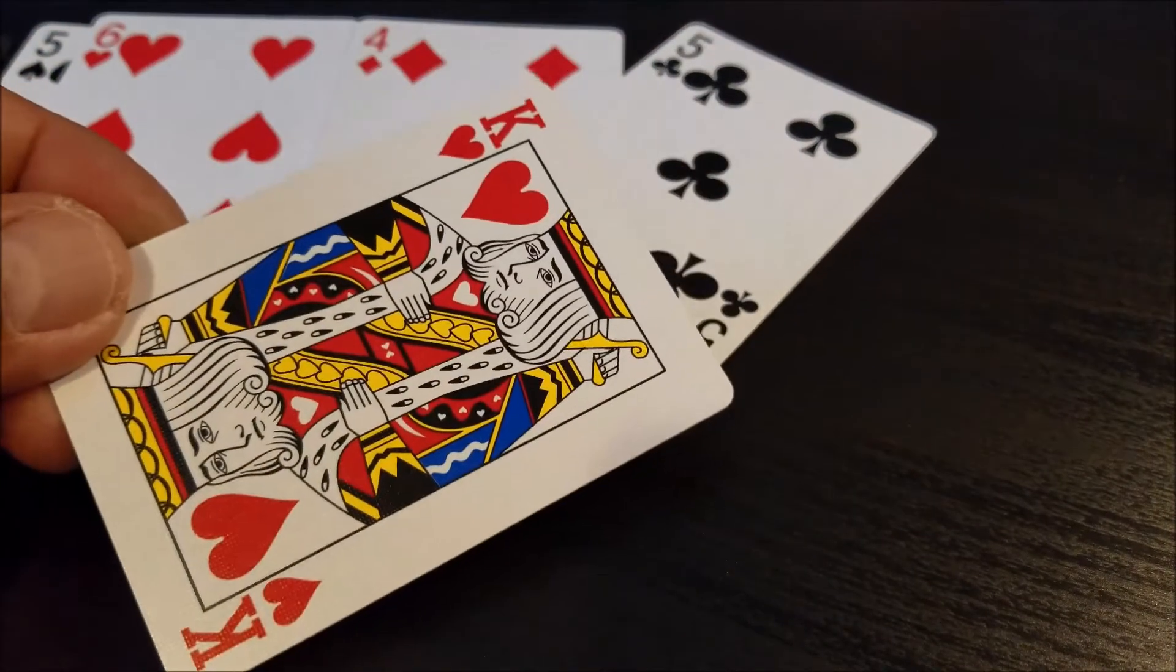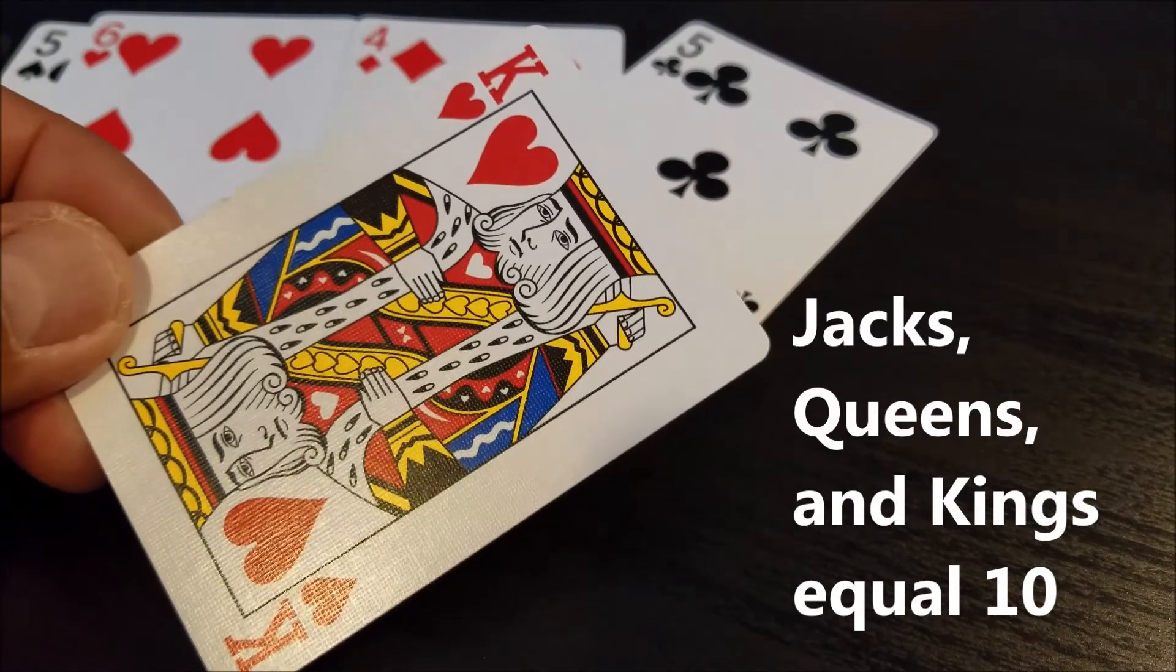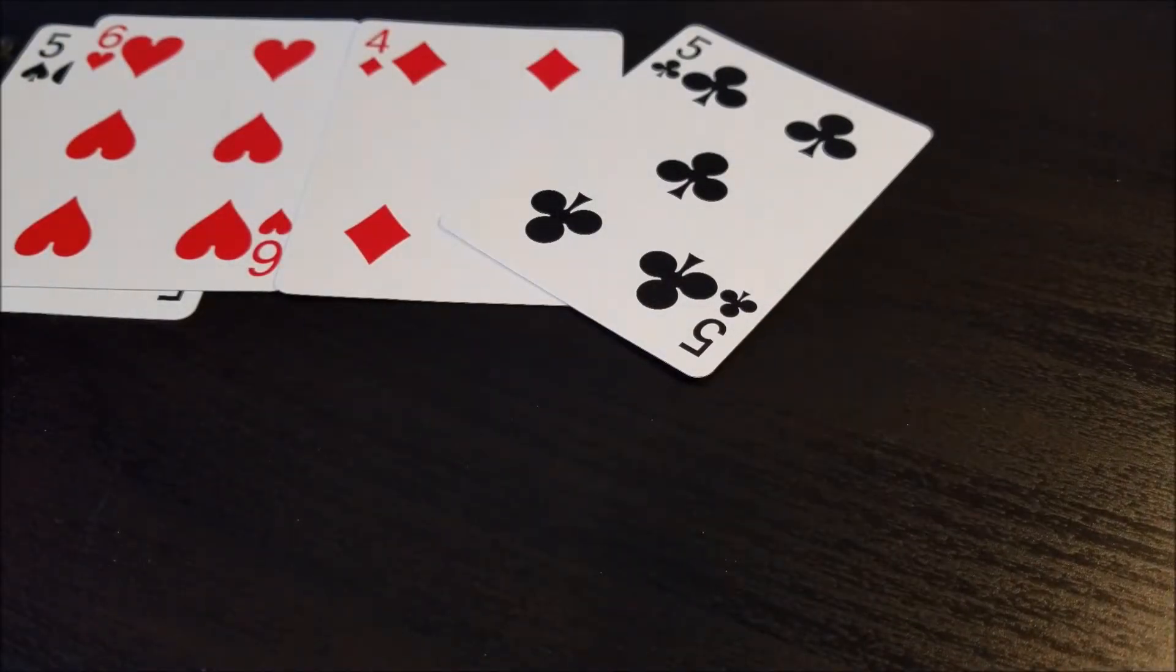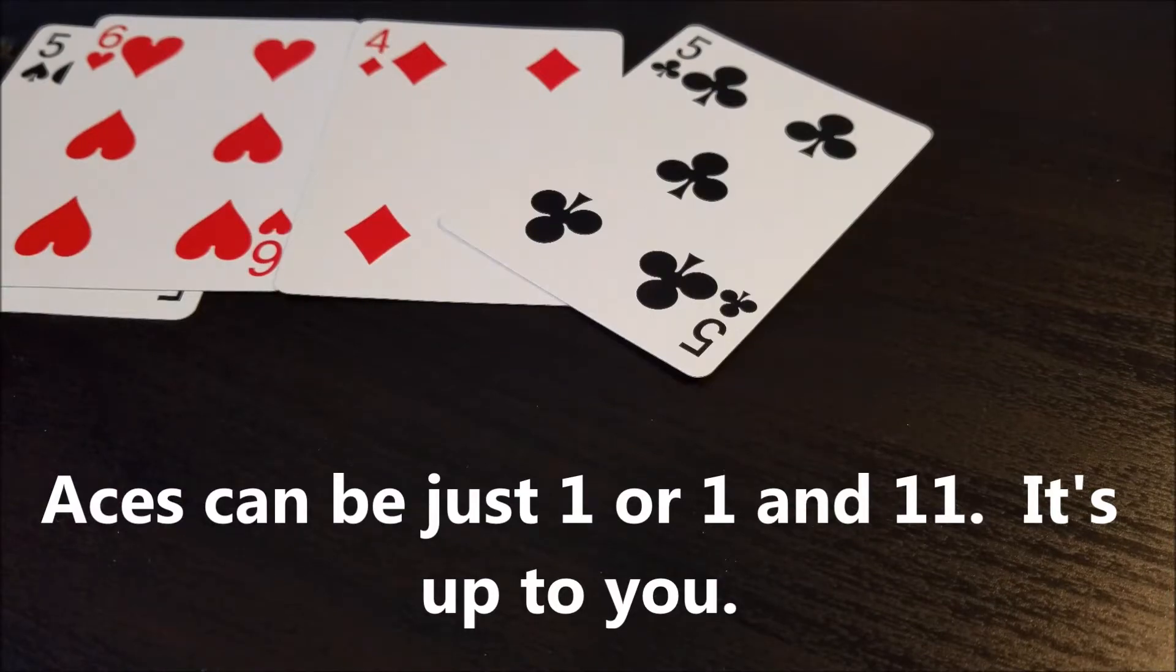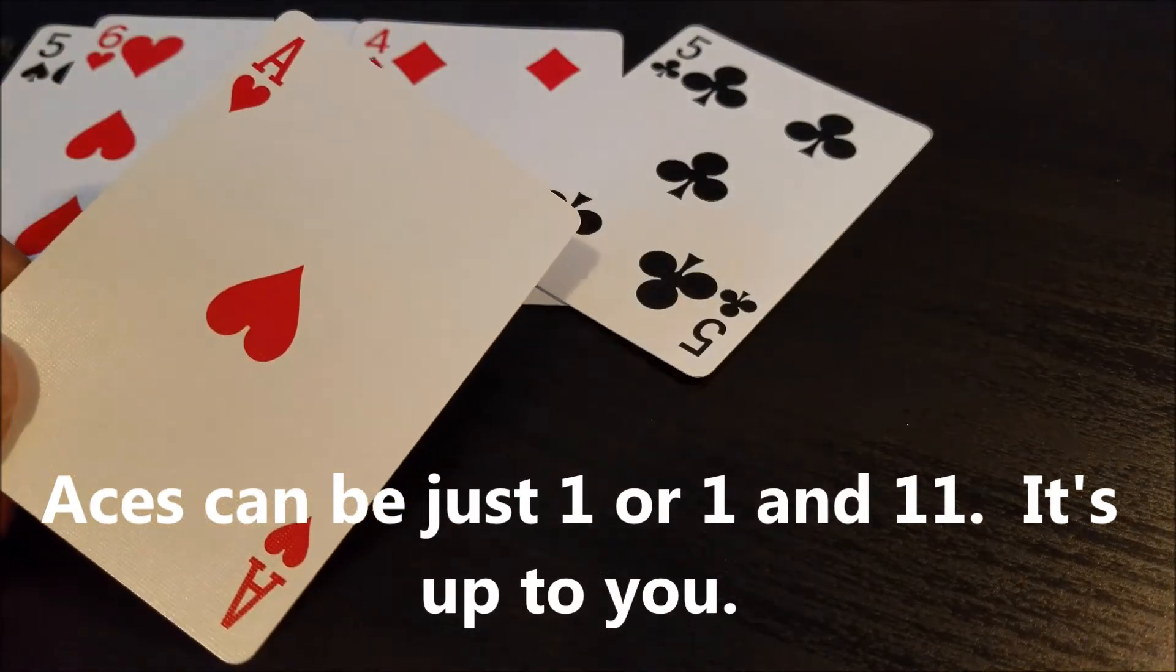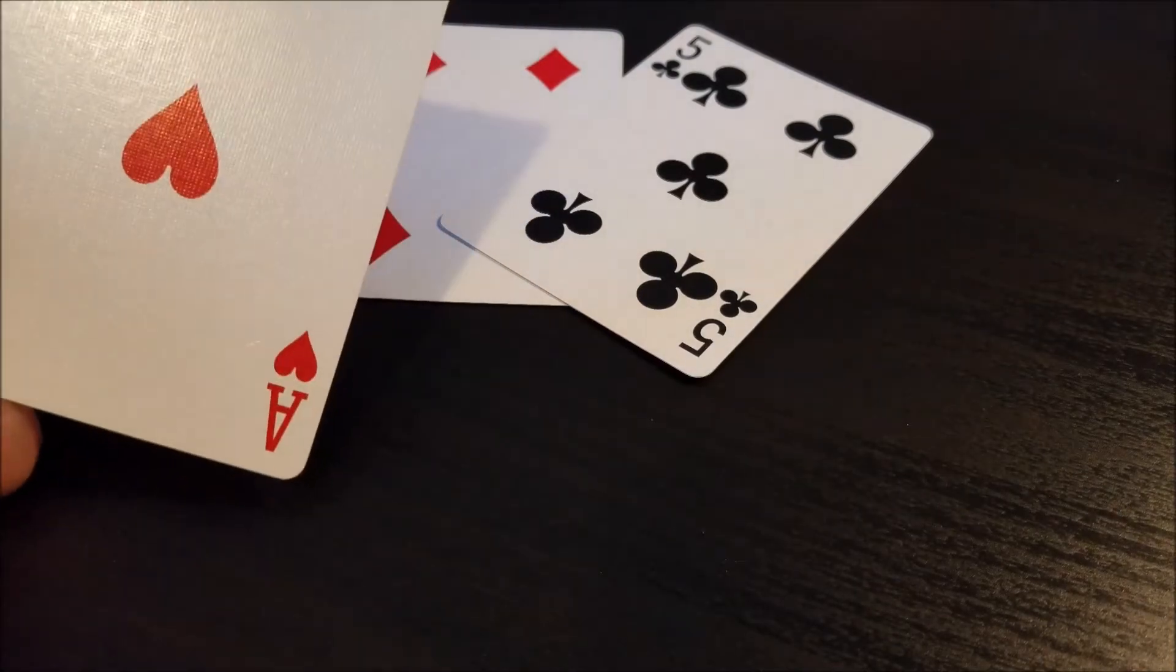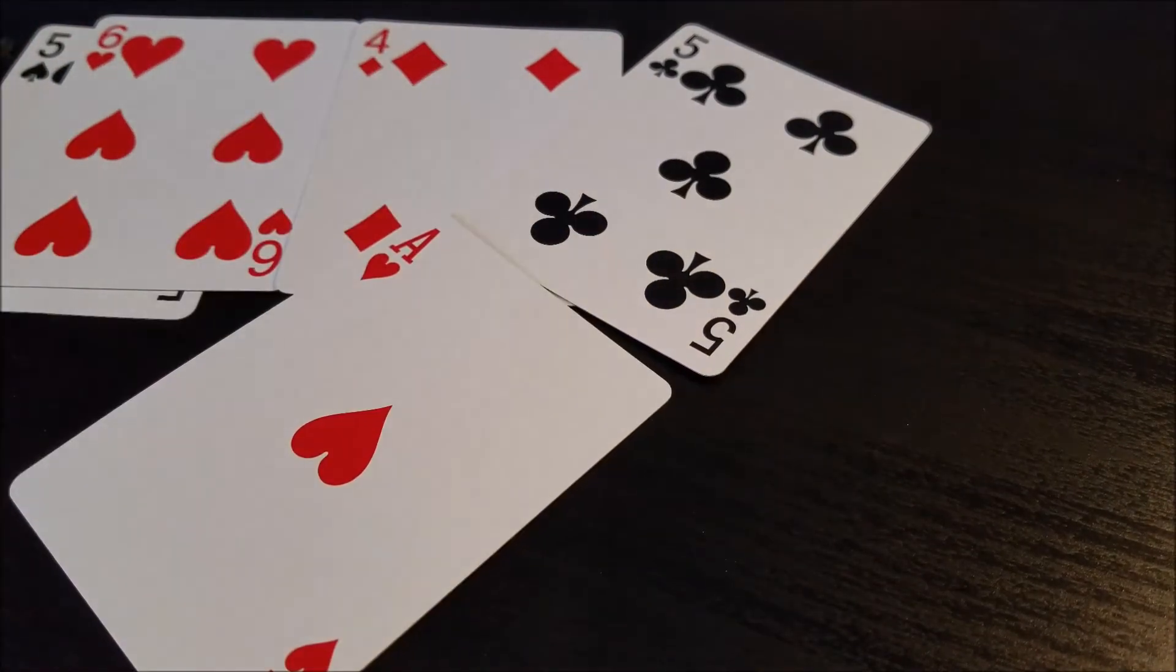So just like in regular blackjack you would use all the jacks queens and kings as 10 and if you do happen to get an ace you can choose to use that as a one or like blackjack you can use it as a one or an 11. All right guys so hopefully that's a fun game.